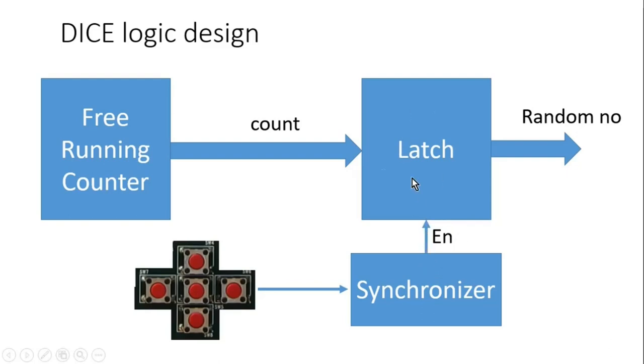And this enable is going to a latch. Now there are two implementations of a latch. In one implementation, when enable is high, I should pass this count value at the output of this latch. And once I release this switch, this enable will go 0 and then whatever count will be there at the random number should be latched. But you will get your final random number once you release your switch.